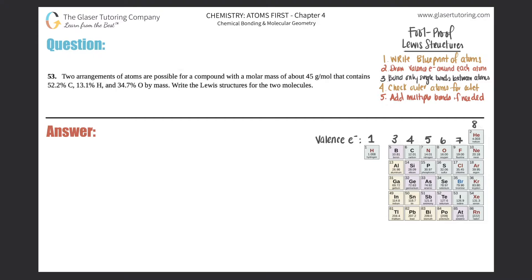Number 53. Two arrangements of atoms are possible for a compound with the molar mass of about 45 grams per mole that contains 52.2% carbon, 13.1% hydrogen, and 34.7% oxygen by mass.